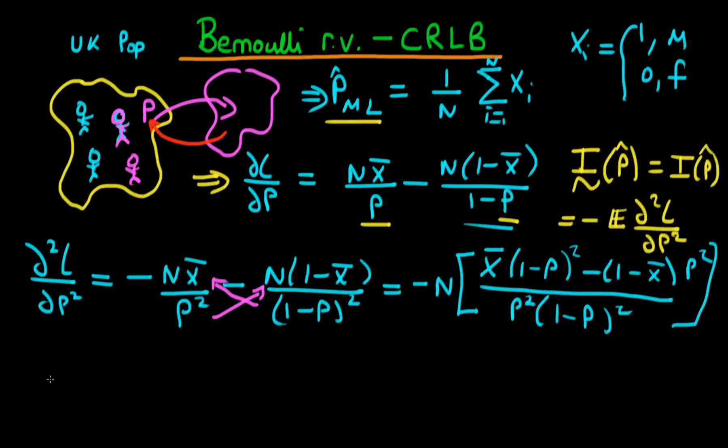Okay, so then we can simplify this a little bit further. If we expand out the bracket, which I leave as an activity for you guys to do if you want to follow up on it, I'm not going to go through it in full here, we get that this is equal to minus N times X bar minus two X bar times P plus P squared, all divided through by P squared times one minus P all squared.